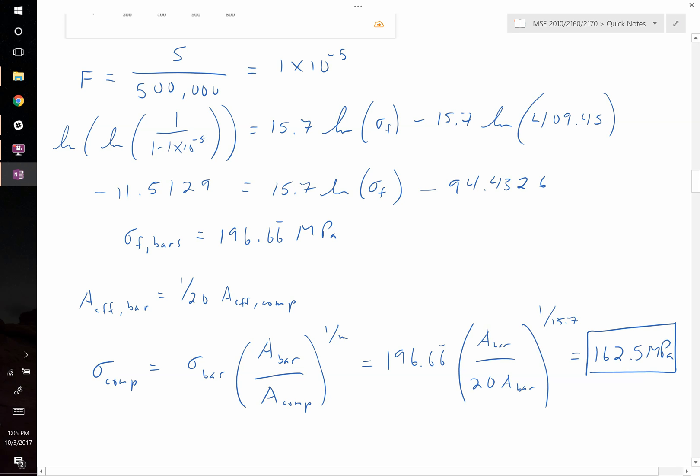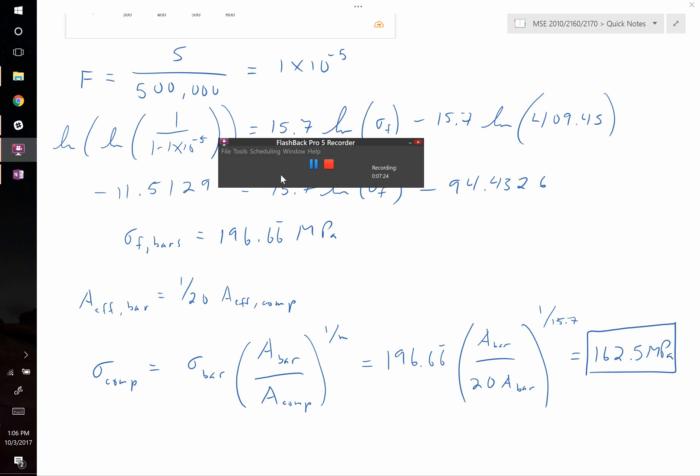Or in other words, even though if you were to test 500,000 bars and you were to find the stress at which only 5 of them break, that is 196.66. Since we're talking about components and these are larger, the statistical probability of having a larger flaw which causes failure increases. Therefore we can only take it up to a smaller stress, only 162 megapascals. And that's how you use Weibull modulus in probabilistic design. Thank you.